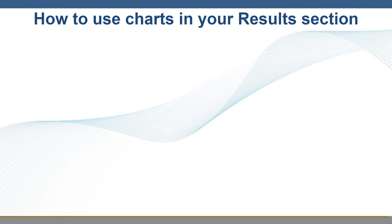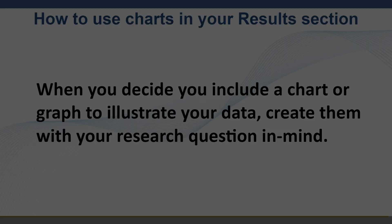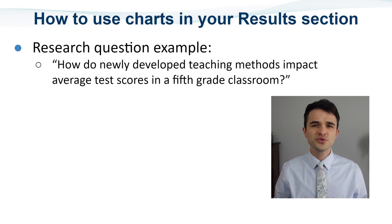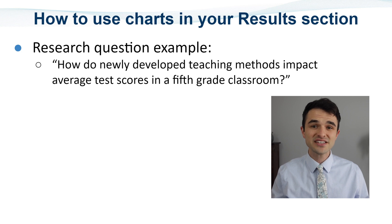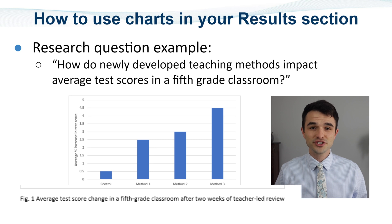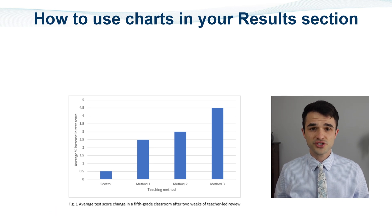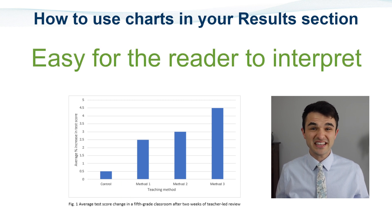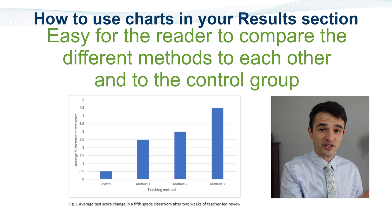How to use charts in your results section. When you decide to include a chart or graph to illustrate data, create them with your research question in mind. Take this research question: how do newly developed teaching methods impact average test scores in a 5th grade classroom? Now let's turn this question into an easy-to-interpret graph. This figure is captioned: average test score change in a 5th grade classroom after two weeks of teacher-led review. You can see how this directly answers the research question. The chart has clearly labeled X and Y axes, is easy for the reader to interpret, and easy to compare the different methods to each other and to the control group.